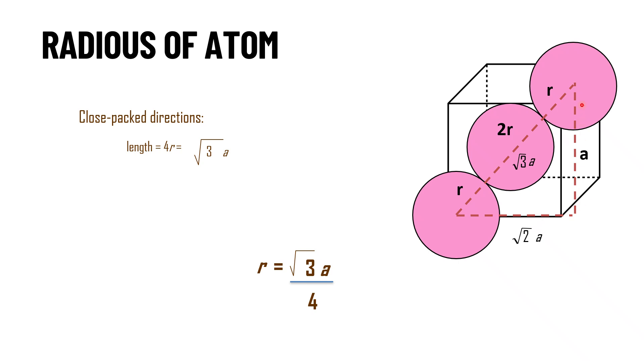As you can see here, one triangle is drawn where one side of that triangle or one edge is nothing but A. From the Pythagoras theorem, this diagonal will be equal to under root of A square plus A square plus A square. That will become R plus 2r plus R, 4r will be equal to under root 3 of A. And if you rearrange the terms, you will get the value for R is equal to under root 3a divided by 4. That will be the atomic radius we need to consider for further calculation.